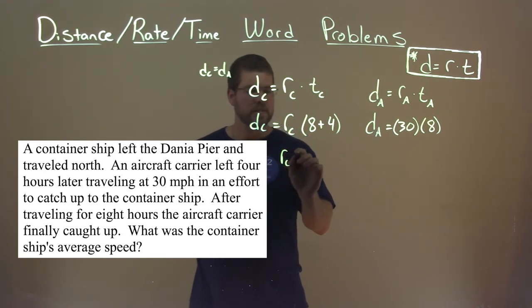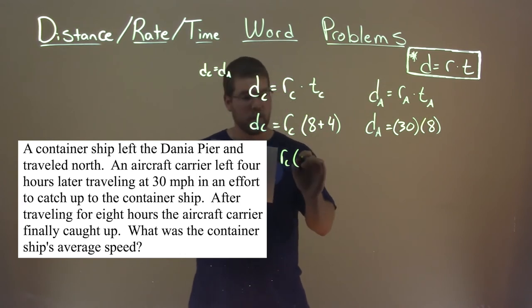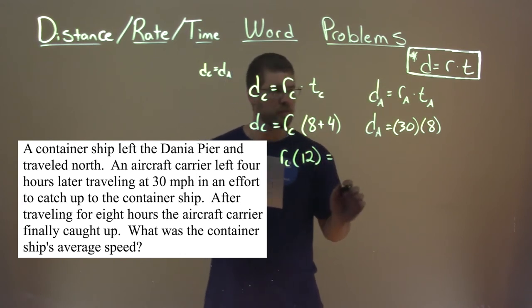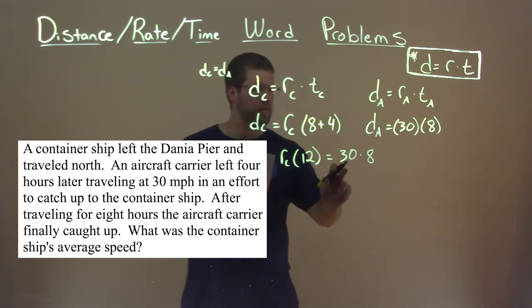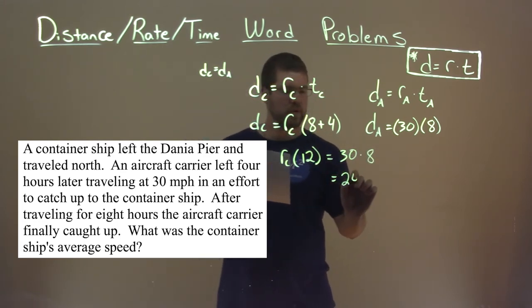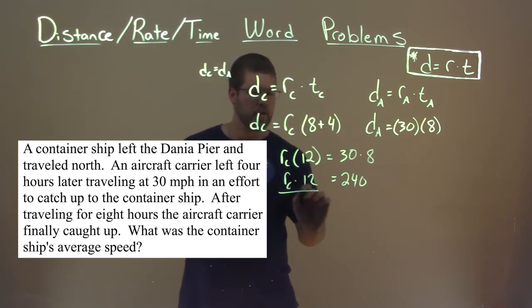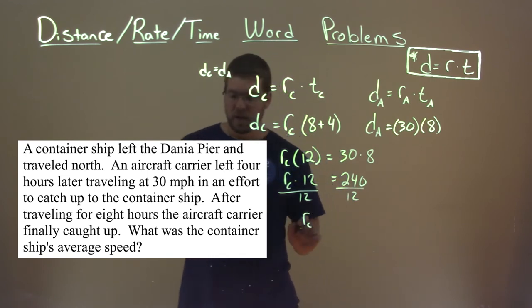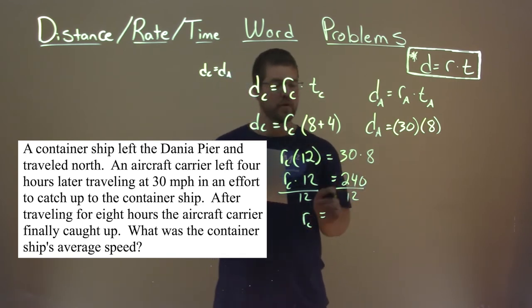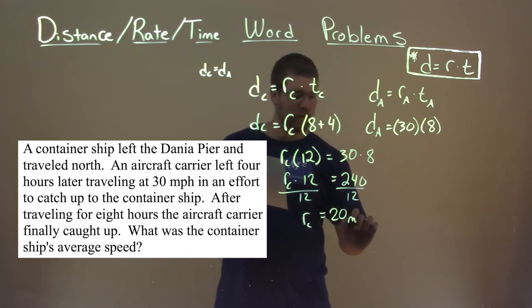So we have R sub C times eight plus four — that's 12 — is equal to 30 times eight. 30 times eight is 240. We have R sub C times 12 here, so divide both sides by 12, and we have the rate of the container ship is 240 divided by 12, which is 20, and our units are miles per hour.